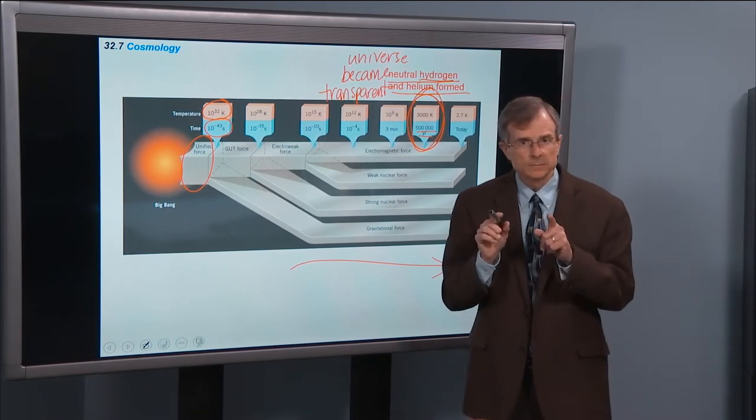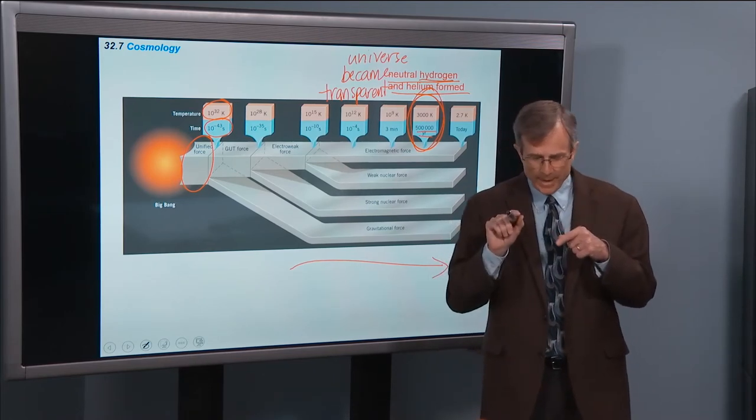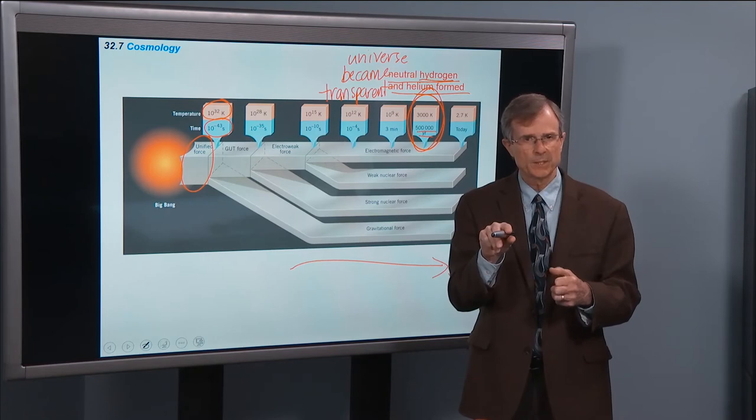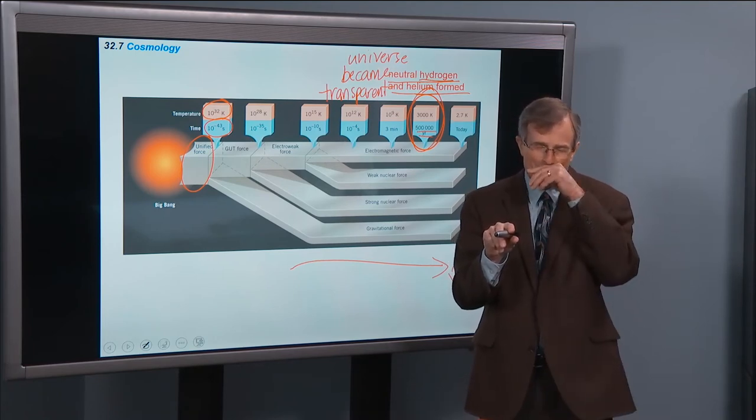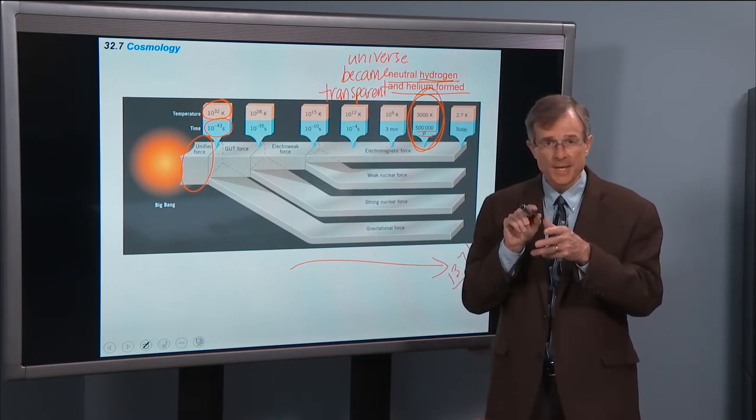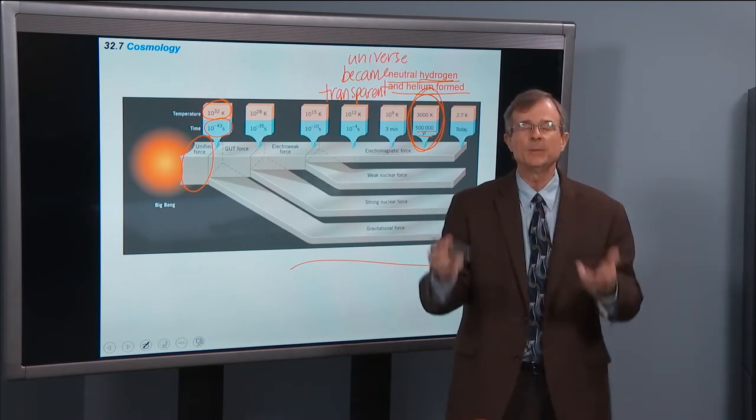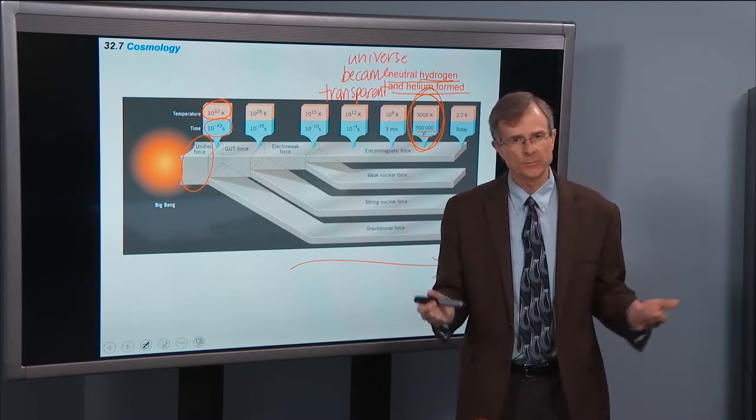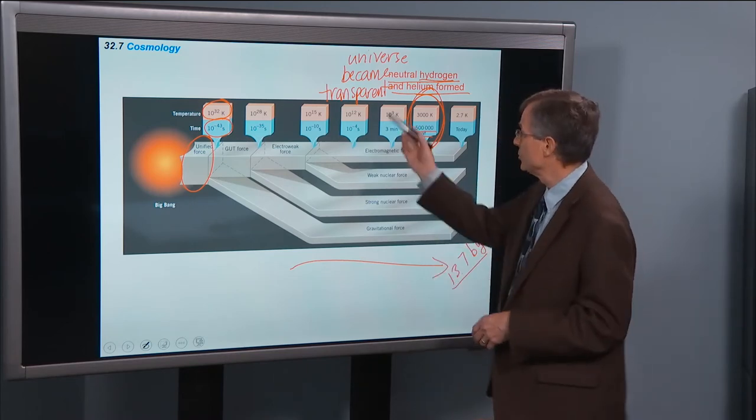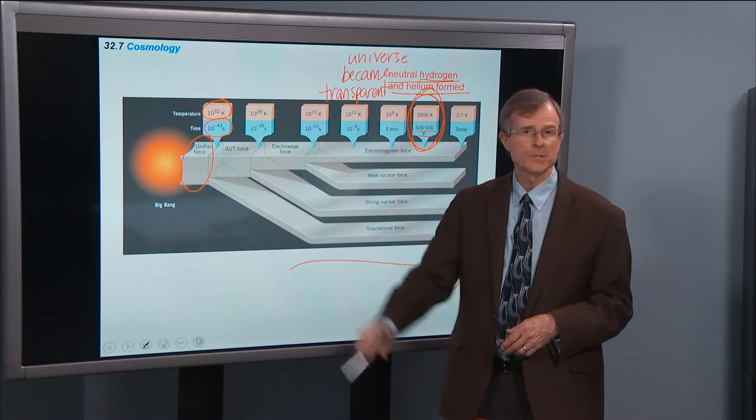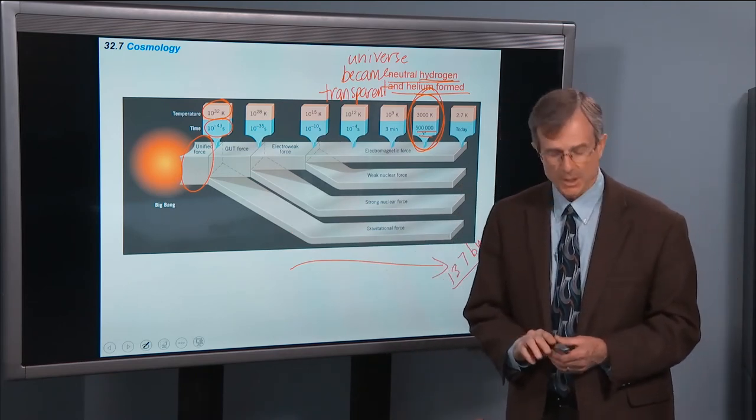And photons, particles of light, that happen to be moving in a particular direction when the universe became transparent to photons. Now, since that time, they've just been going through space in whatever direction they happen to be going in at the time that the universe became transparent to photons. And they've been traveling in the universe ever since. What happened to those photons?